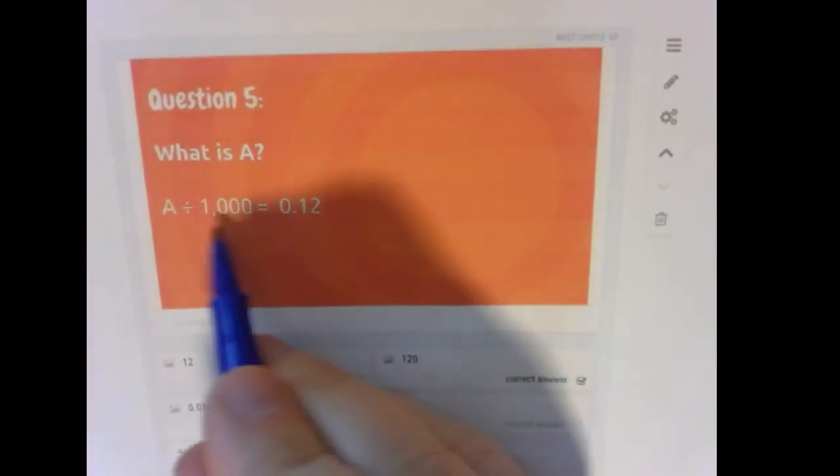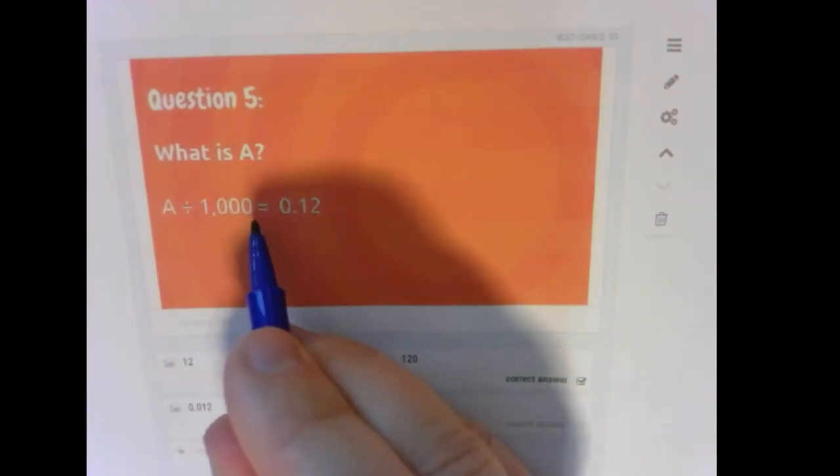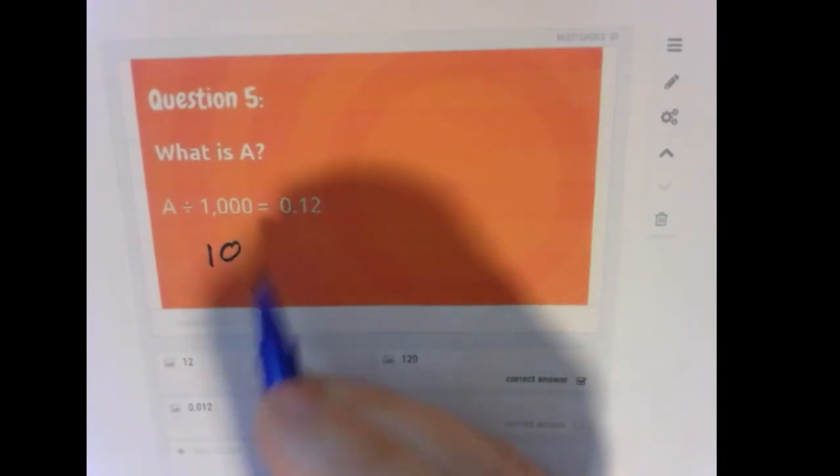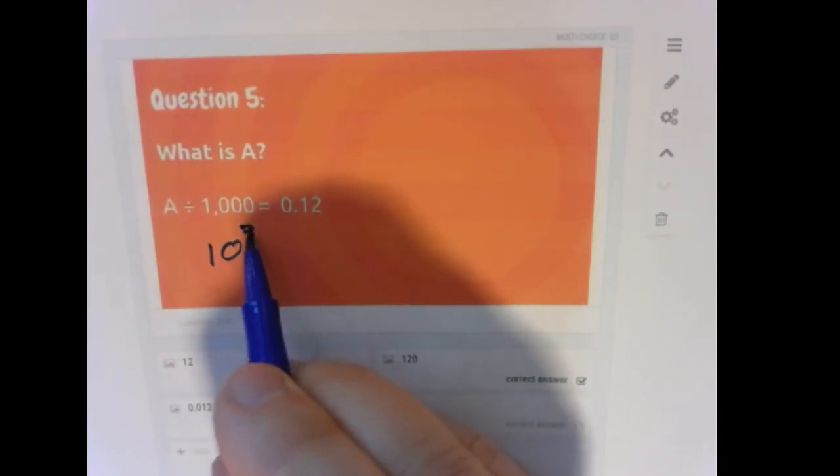If we put this back in the exponential form, so three zeros here, or 1,000, that would be like, okay, 10 to the first power is 10. 10 to the second power would be 100. 10 times 10 times 10 would be our 1,000 that we're looking for.